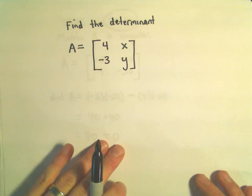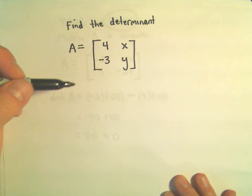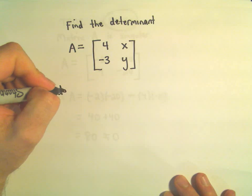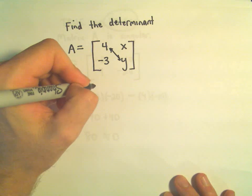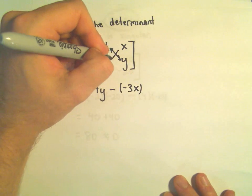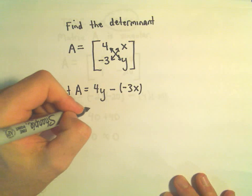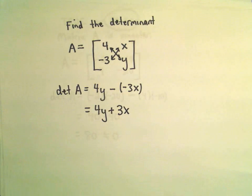Suppose we want to calculate a determinant here generically. We've got A equals 4, x, negative 3, and y. Well, again, to calculate the determinant of this, we just cross multiply here. So, I'm going to get 4 times y minus negative 3 times x. Well, we can simplify that and say it's 4y plus 3x.